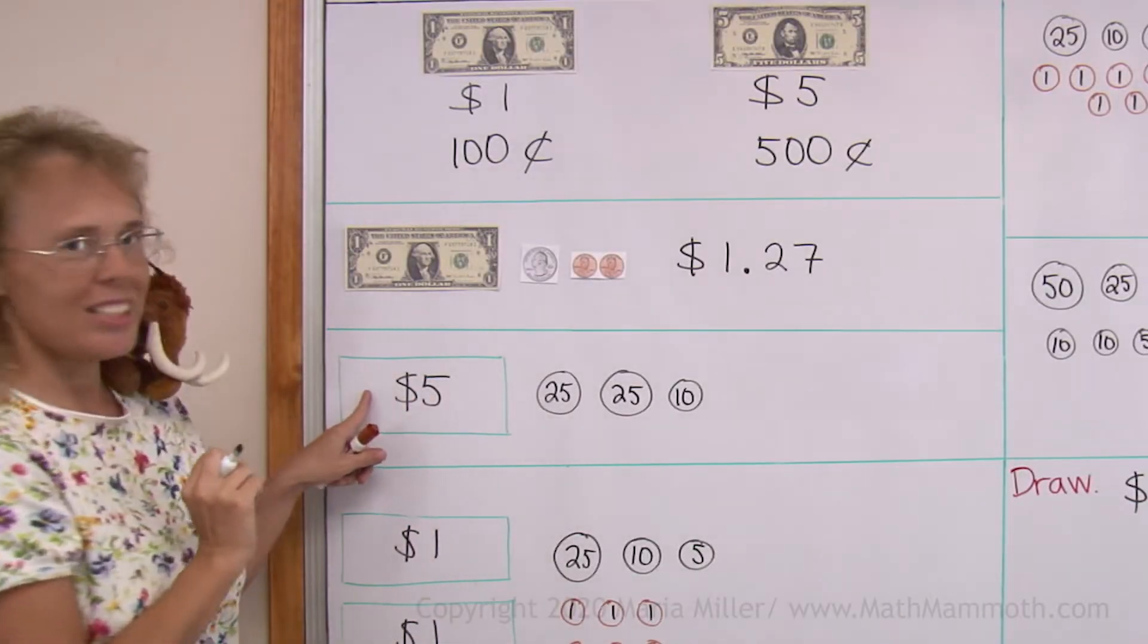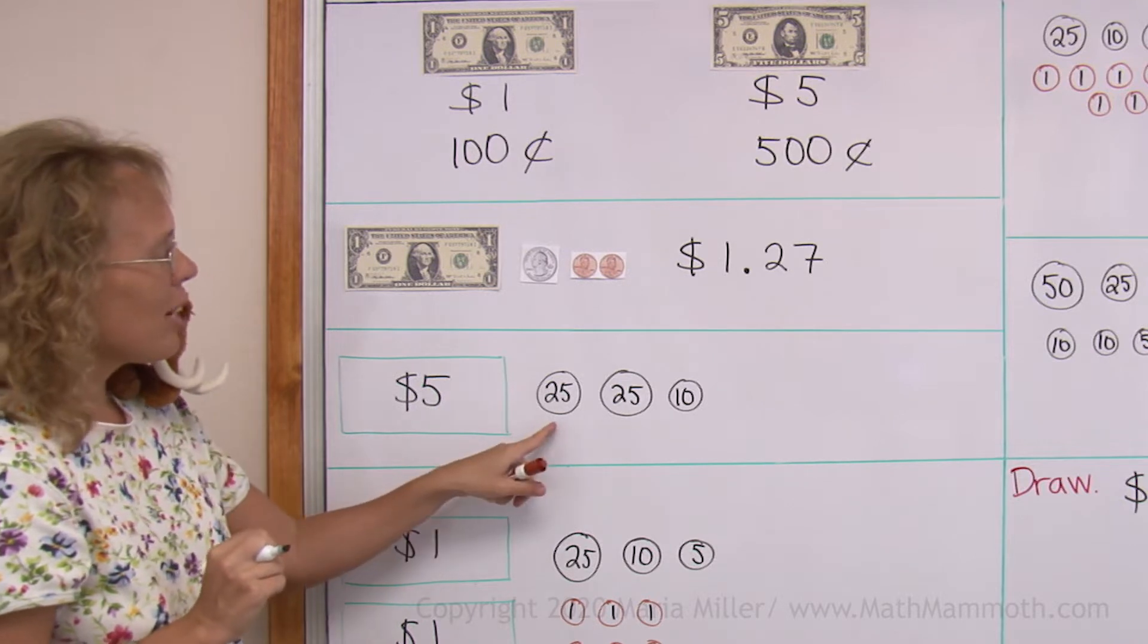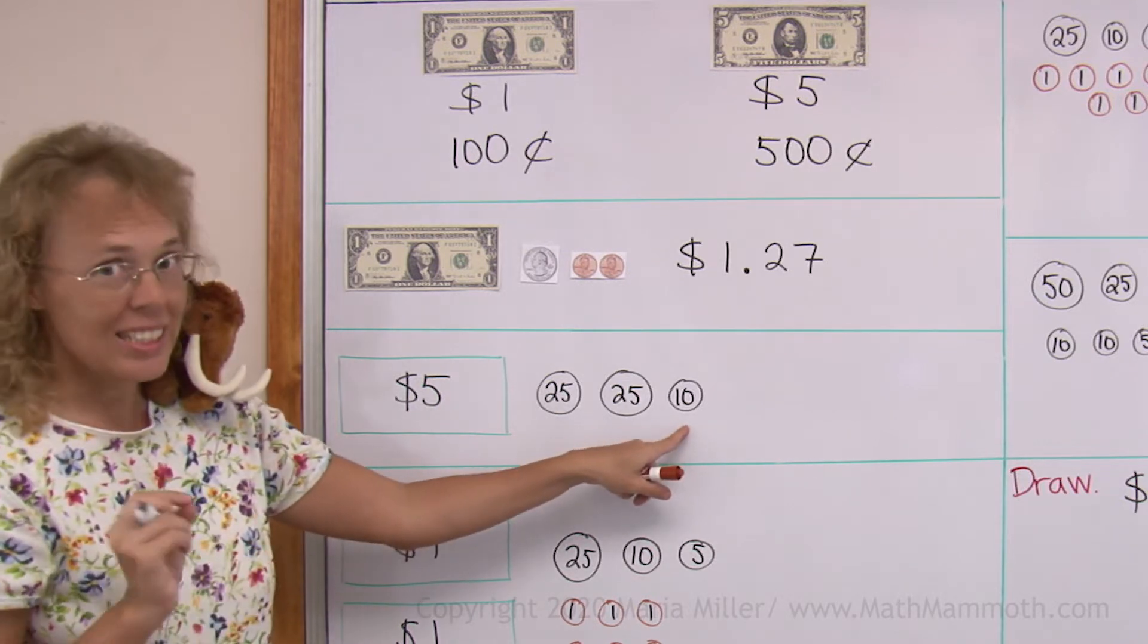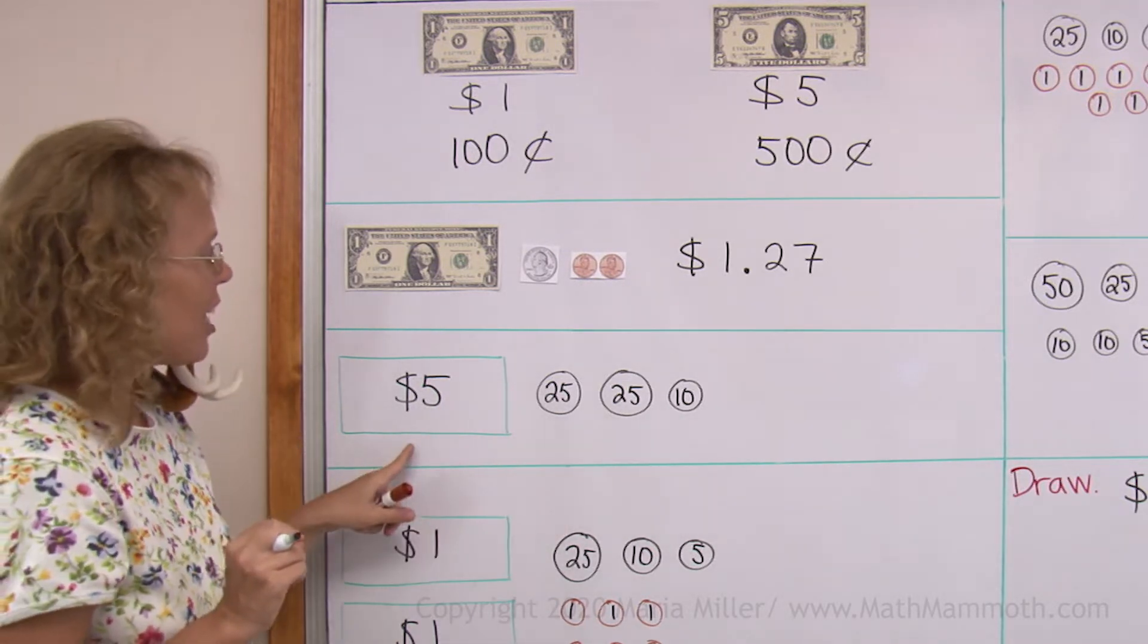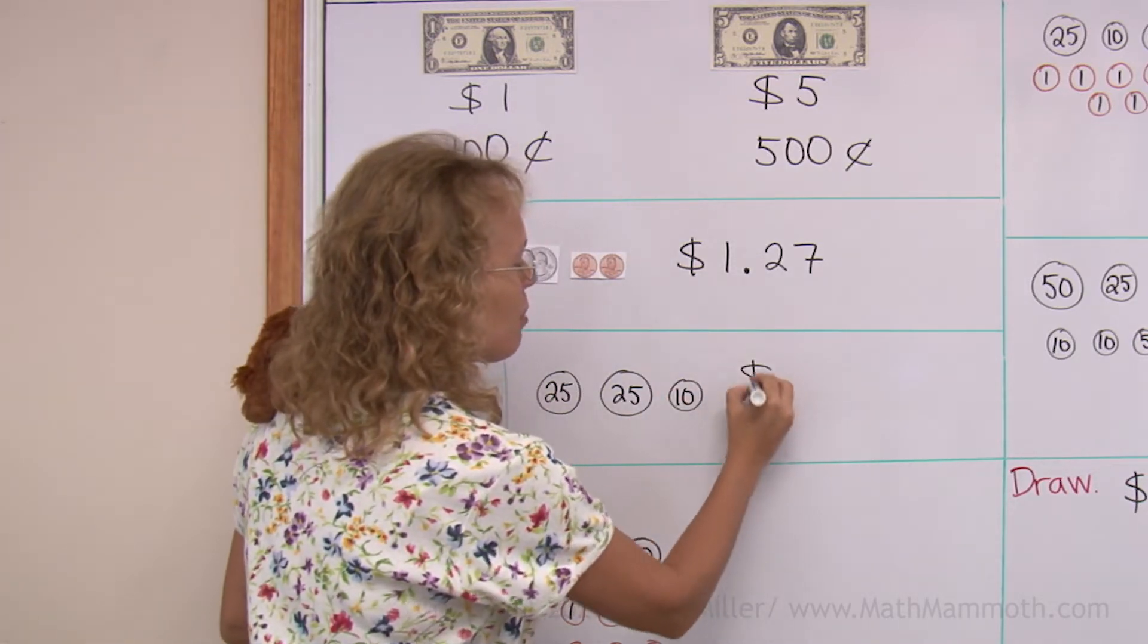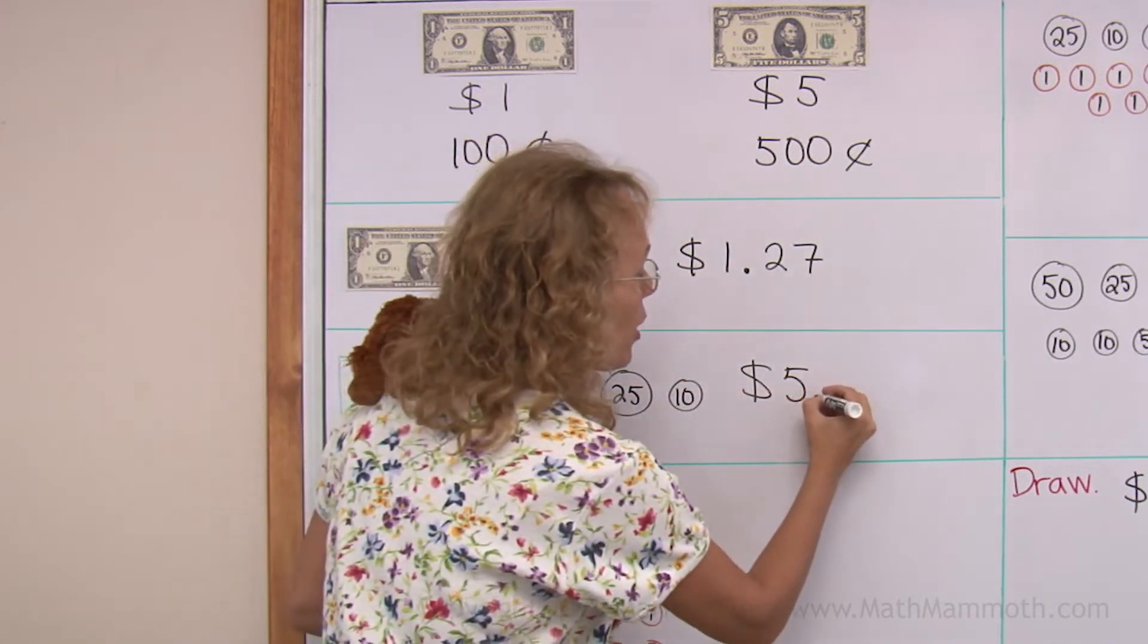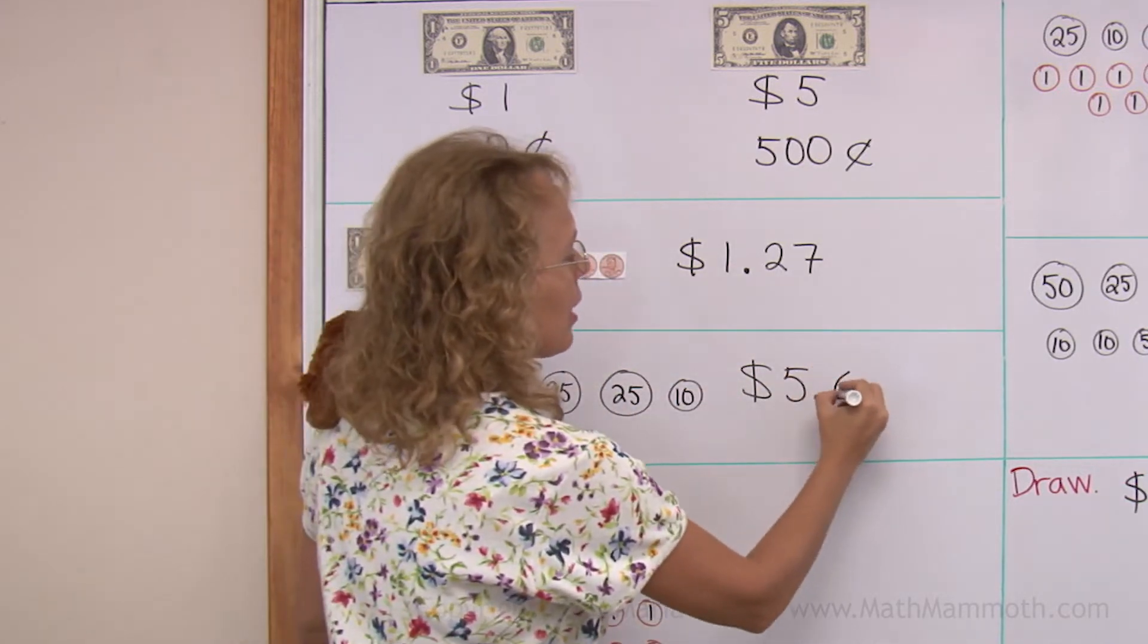Let's do this one too. This is now a five dollar bill, this one here. And then we have fifty, sixty cents, right? Five dollars and sixty. So I put the dollar symbol first and then the dollars, five dollars. And then a point and then the cents, like that.